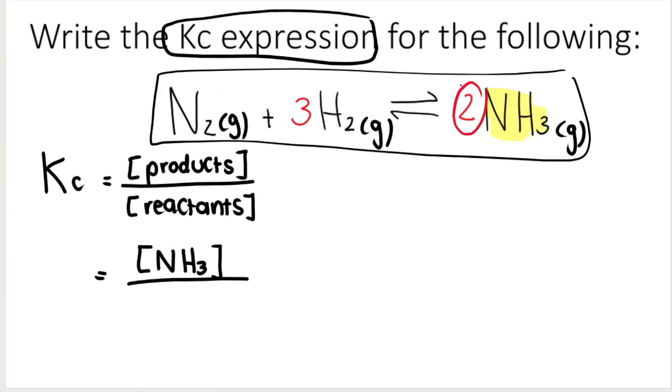Those big numbers in front, the balancing coefficients, it tells me I have two ammonia molecules, essentially. That two, and this is very important, becomes the exponent of my bracket.